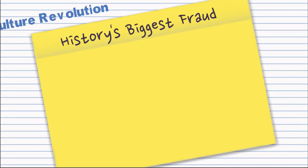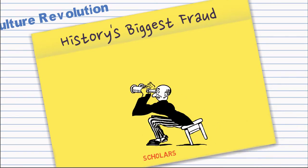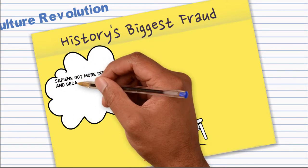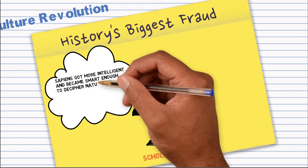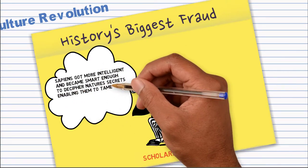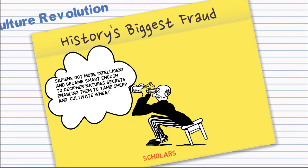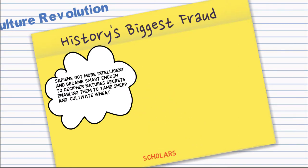The first thing he does is he calls the Agricultural Revolution history's biggest fraud. The reason he says this is that at that time, many scholars were saying that Sapiens got more intelligent and became smart enough to decipher nature's secrets, enabling them to tame sheep, cultivate wheat, and so the Agricultural Revolution was a very active and positive event.